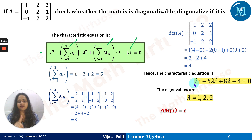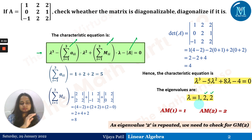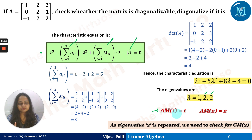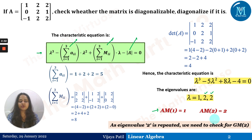λ = 1 has algebraic multiplicity 1, meaning it appears only once. λ = 2 has algebraic multiplicity 2, as it is repeated twice. Our target is to check the geometric multiplicity of λ = 2. We need not worry about λ = 1 since its geometric multiplicity will automatically equal 1. Only if the geometric multiplicity of 2 equals its algebraic multiplicity can we say the matrix is diagonalizable.